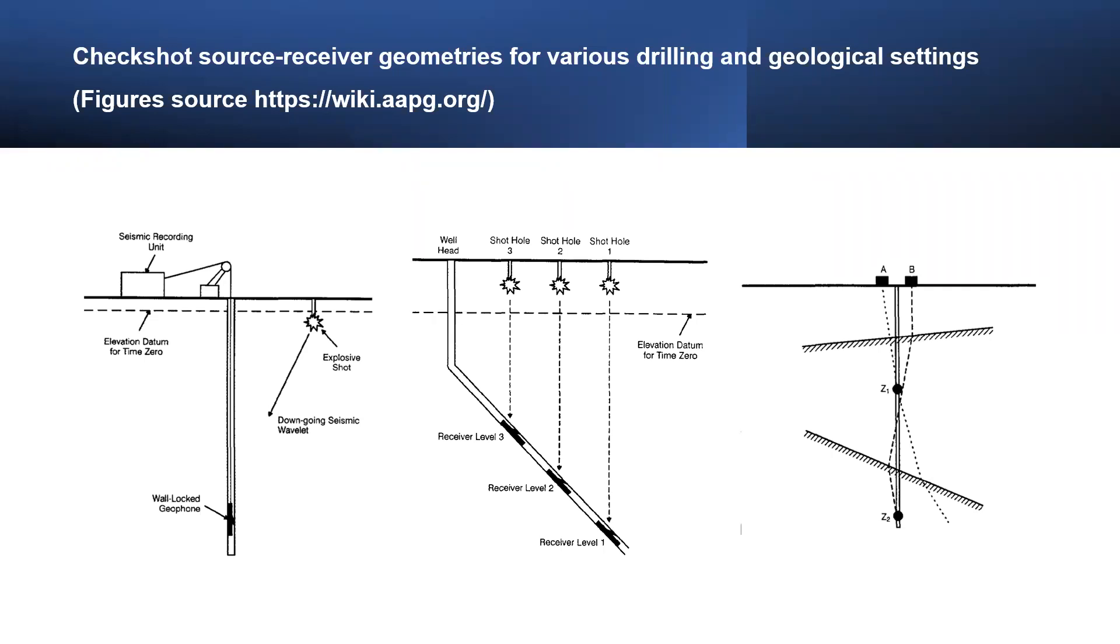CheckShot source-receiver geometries for various drilling and geological settings. If I start from left to right, the first figure is a source-receiver geometry commonly used in onshore CheckShot surveys, also called standard configuration. The borehole receiver is first lowered to the deepest point, and travel time to this deepest receiver position is measured for one or more surface shots. The receiver is then moved upward at a distance of 200, 500, or 1000 feet to record the CheckShot at successively shallower levels.